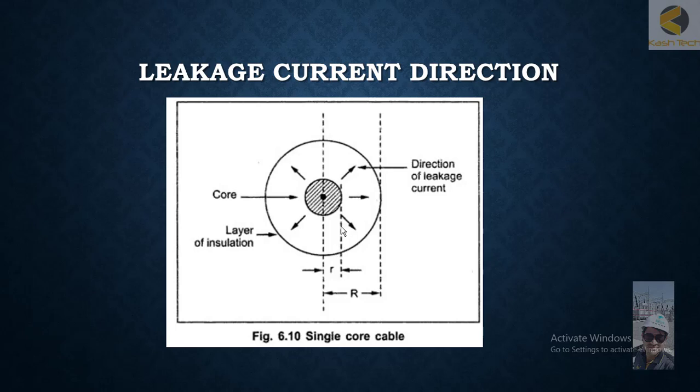You can see this is one layer of insulation. The direction of leakage current will be from the current-carrying conductor—the conductor carrying the potential or voltage—towards the insulation and towards the ground. This is the direction of leakage current. Thank you very much.